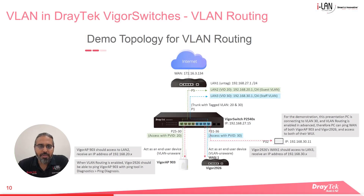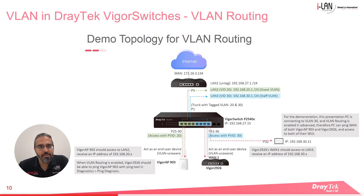Let me give you a quick demonstration of VLAN routing using the network topology shown in this diagram. The VigorSwitch P2540X has two VLANs configured. VLAN 20 is shown in green and VLAN 30 shown in blue, and each VLAN is associated with an IP subnet. We want devices in each of these VLANs to be able to communicate with devices in the other VLAN through the VigorSwitch VLAN routing.